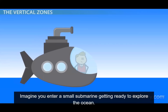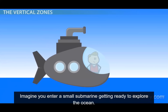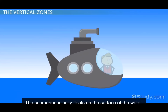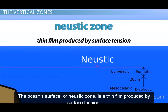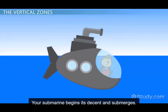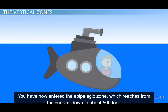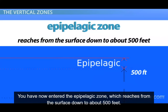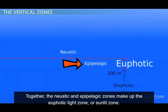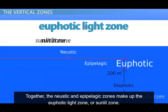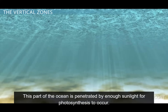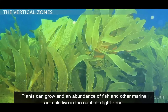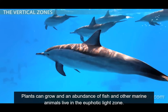Imagine you enter a small submarine, getting ready to explore the ocean. The submarine initially floats on the surface of the water. The ocean surface, or neustic zone, is a thin film produced by surface tension. Your submarine begins its descent and submerges. You have now entered the epipelagic zone, which reaches from the surface down to about 500 feet. Together, the neustic and epipelagic zones make up the euphotic light zone, or sunlit zone. This part of the ocean is penetrated by enough sunlight for photosynthesis to occur, and plants can grow here alongside an abundance of fish and other marine mammals.